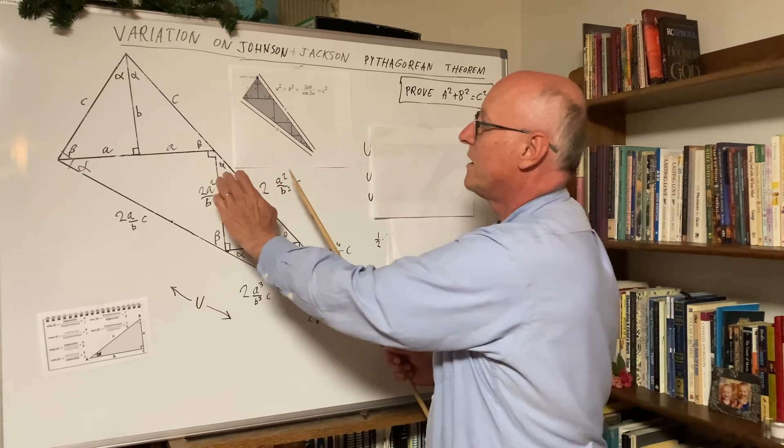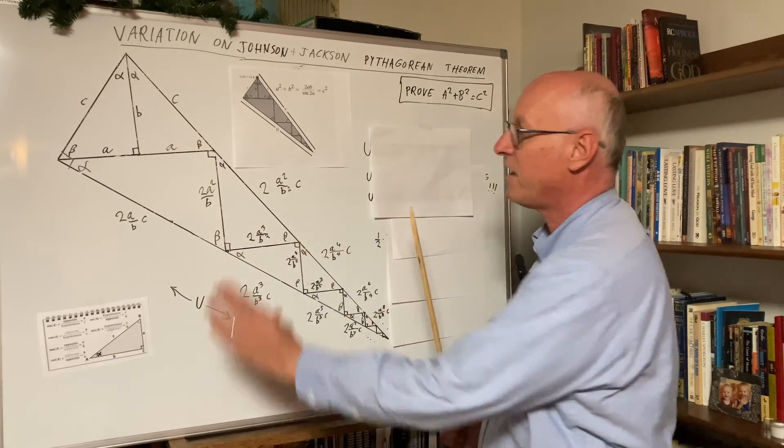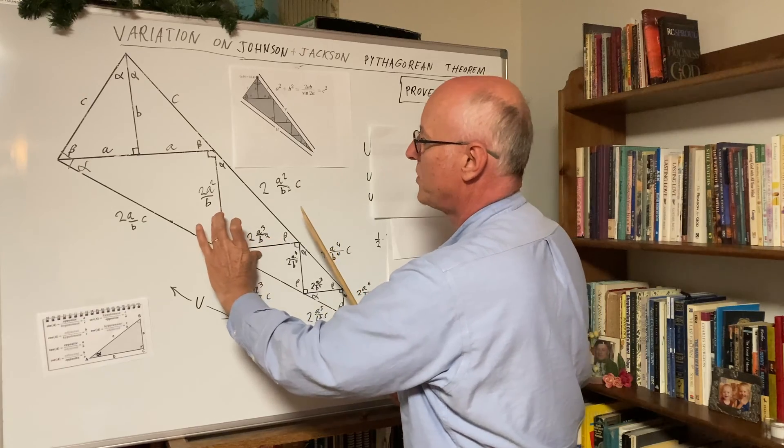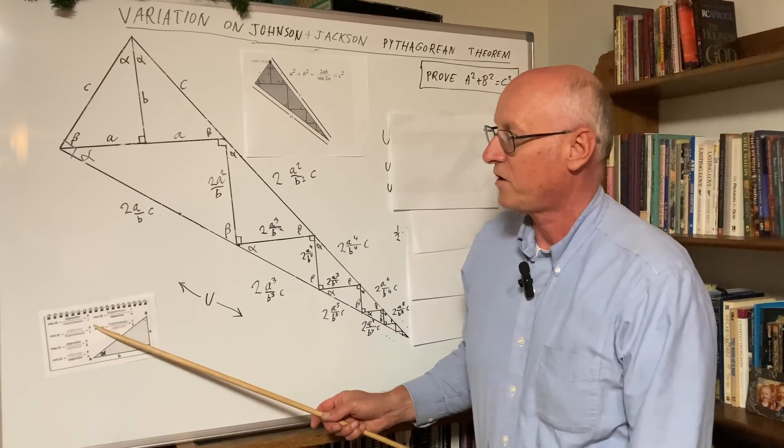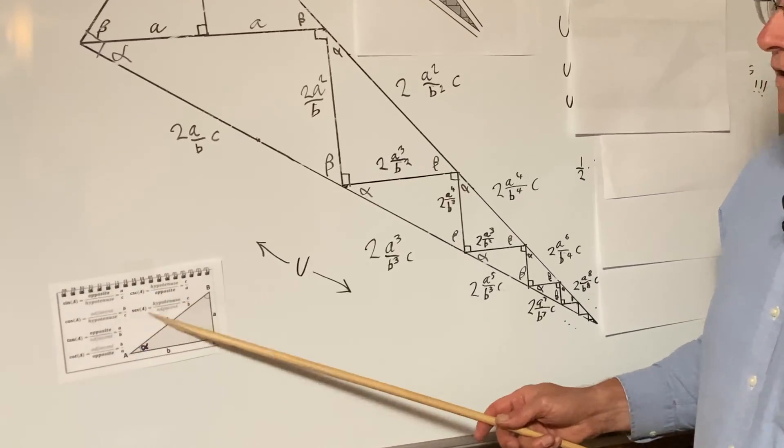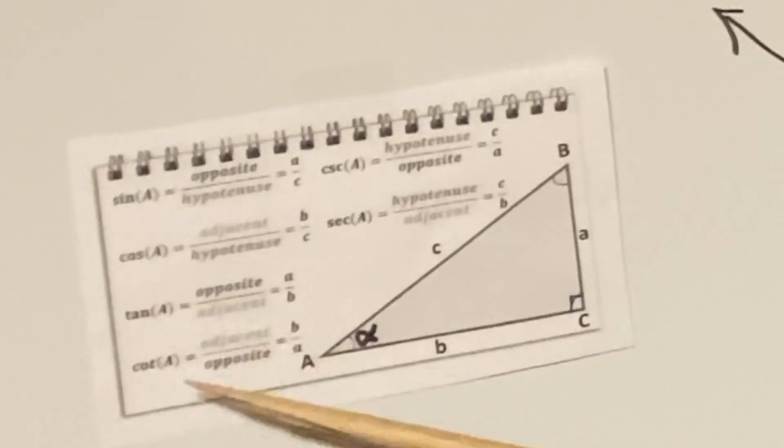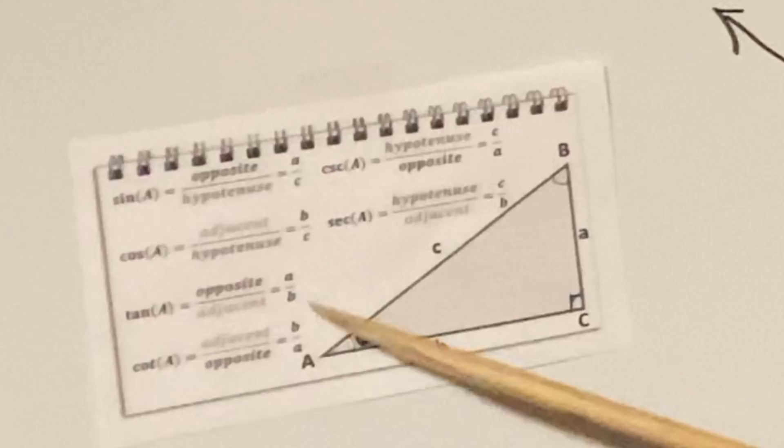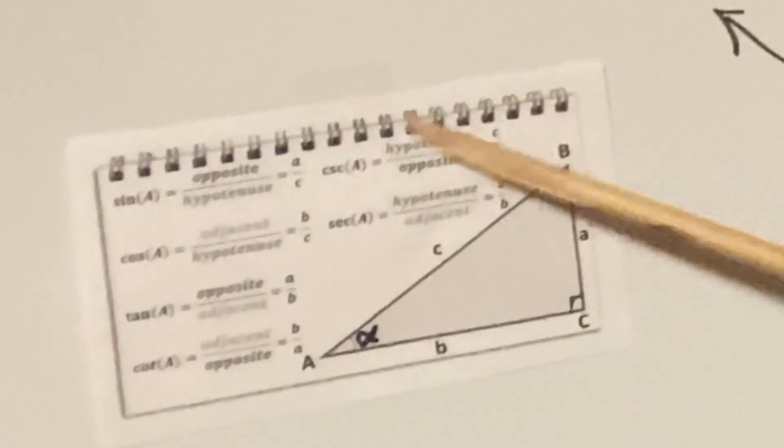So these are all with the same angles, alpha, beta, and 90 degrees. And therefore, the sides, the ratio of these sides are also the same, and that's basically trig. And here's a list of all the various trig functions: sine, cosine, tangent, cotangent, cosecant, and secant. You should remember these. They're so common.